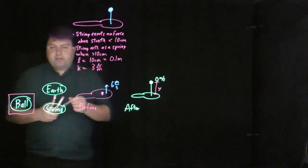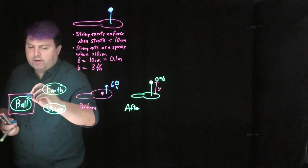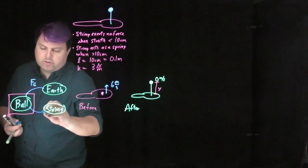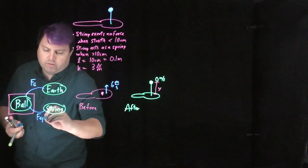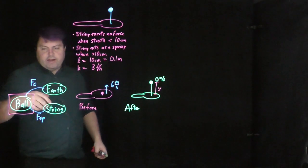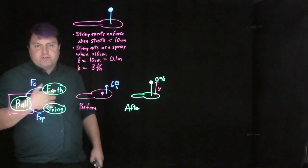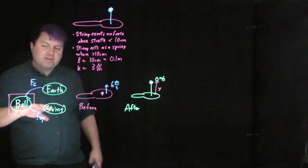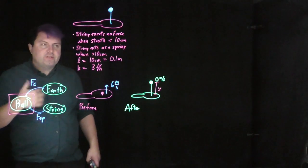What forces do we have? Between the ball and the Earth, we have our force of gravity. Between the ball and the string, we have the spring force, or no force. We don't have any forces that are constant, but both of these forces conserve energy.